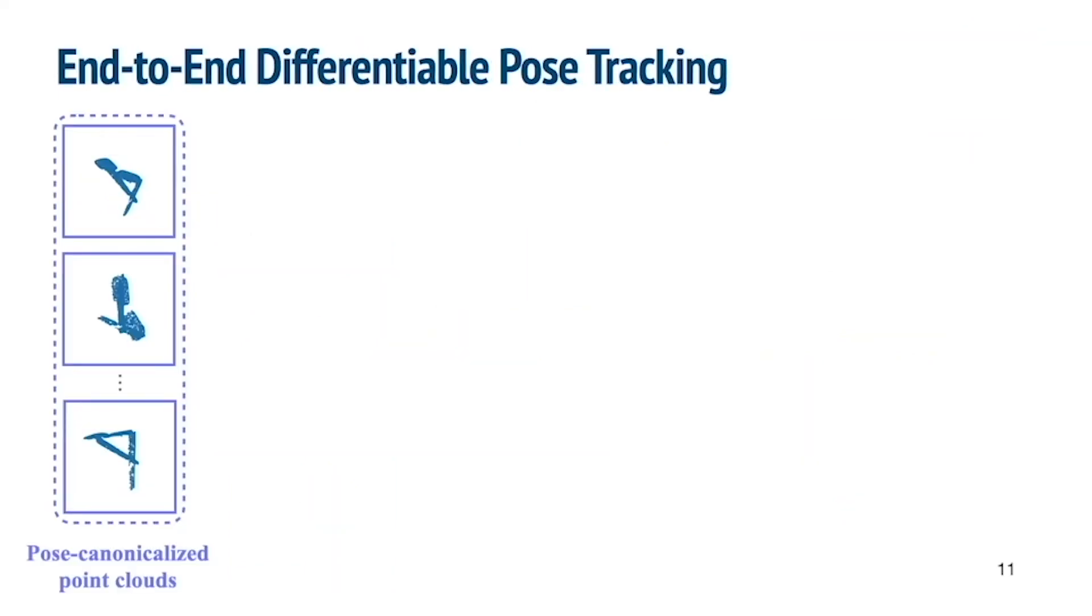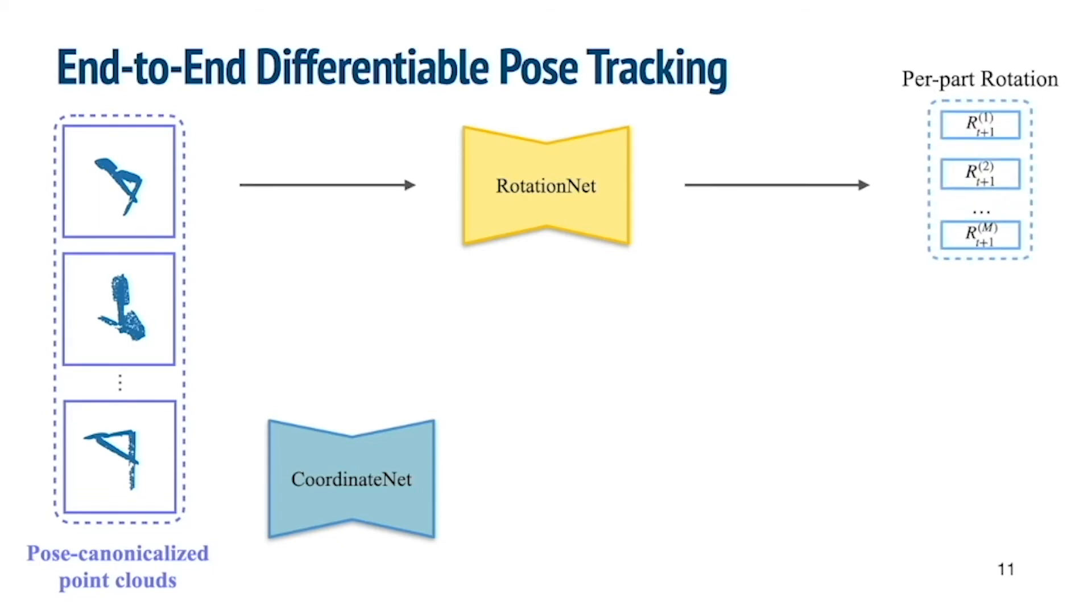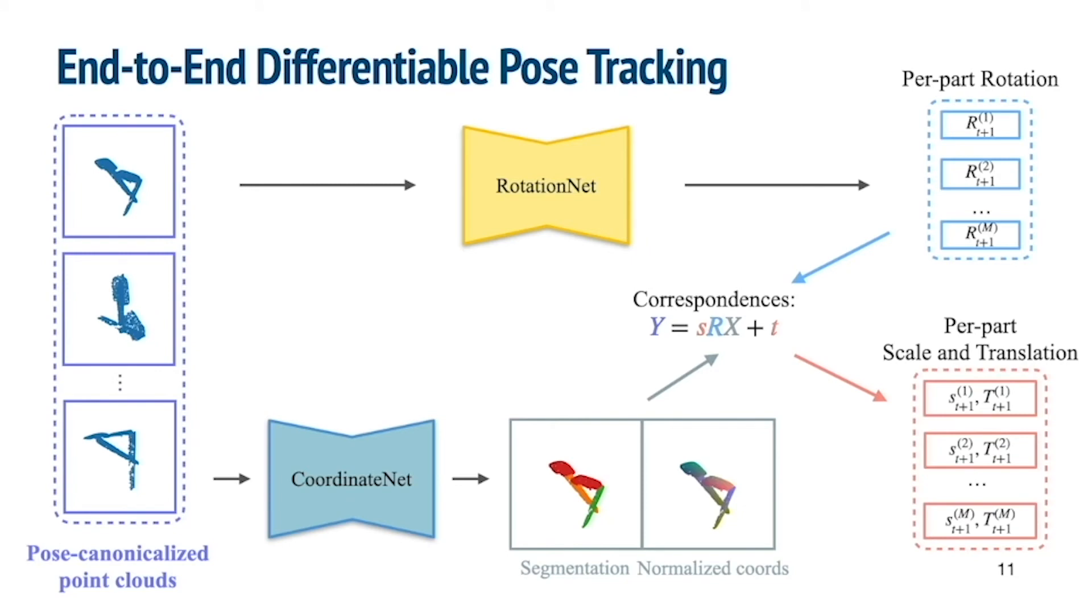To take the best of both worlds, our framework combines the two aforementioned approaches by constructing rotation net and coordinate net. Thanks to pose canonicalized point clouds, our rotation net can directly and accurately regress residual rotations, thus being free from using RANSAC. At the same time, our coordinate net predicts part segmentation and normalized coordinates, from which we can analytically compute per-part scales and translations with high accuracy. This results in an end-to-end differentiable pose tracking pipeline, optimized for accuracy, robustness, and speed.